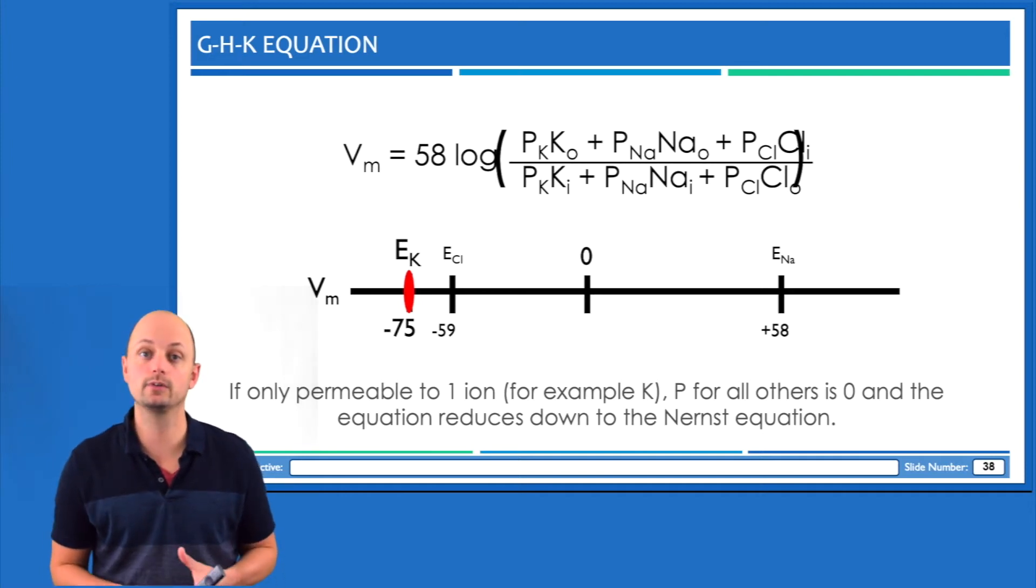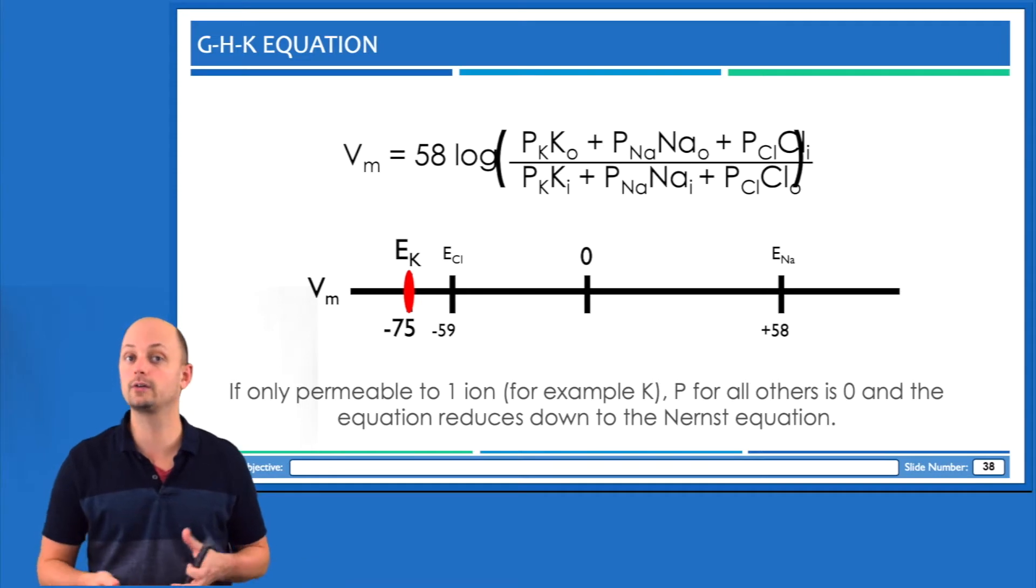The Goldman-Hodgkin-Katz or GHK equation is used to calculate membrane potential. Even though you won't have to do any actual calculations with it, you can see that in some ways it kind of resembles the Nernst equation, at least in the sense that it takes into account concentration gradients. Those are represented here as the outside concentration of an ion over the inside concentration of the ion.